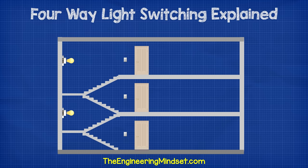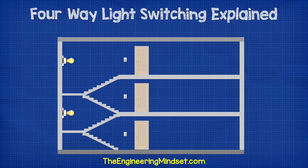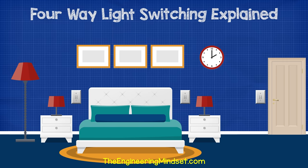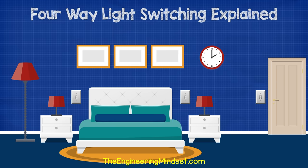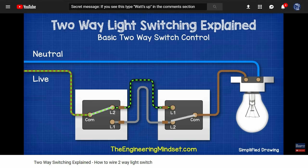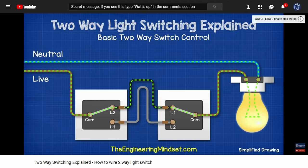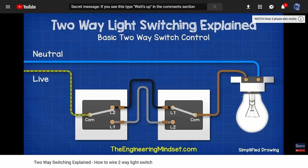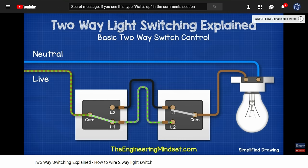This is very useful, for example, to control the lights on some stairwells to different floors, or perhaps from either side of the bed and one at the bedroom door, like you might find in a hotel room. In our last video, we looked at how to control a light with just two switches. Do check that video out if you haven't already — links are in the video description below.